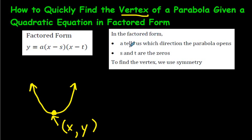So in the factored form, a, this value right here, it tells us which direction the parabola opens up, either up or down. See, a parabola could look like a frown like this, if this was negative.